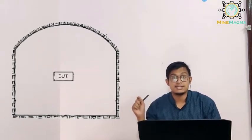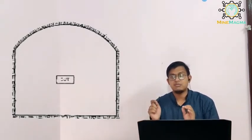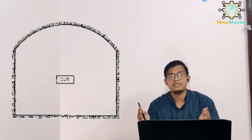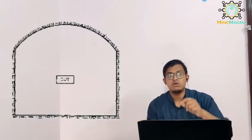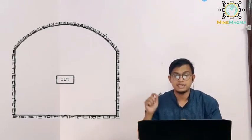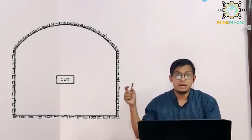Now let us go to the part where we understand the position of the holes. Basically, you can see a working face. In the center of the holes, you can see the cut. The cut is the initial holes that we drill. Where we need a free face, this is the cut — our initial cut.